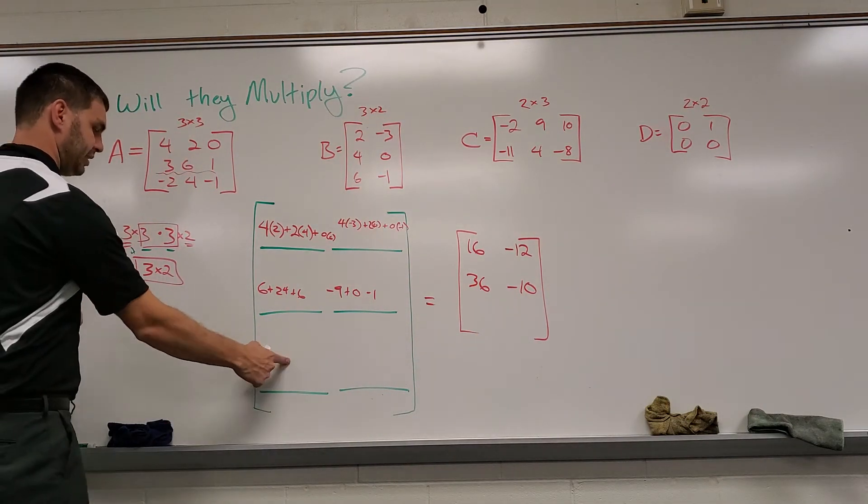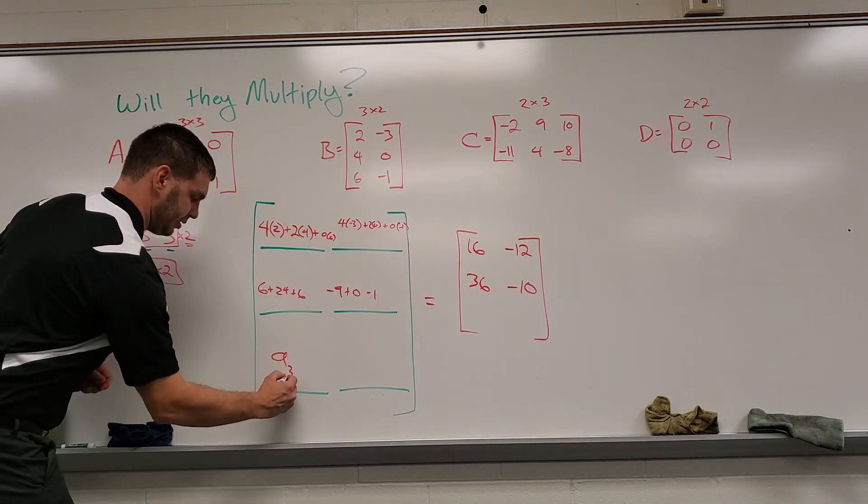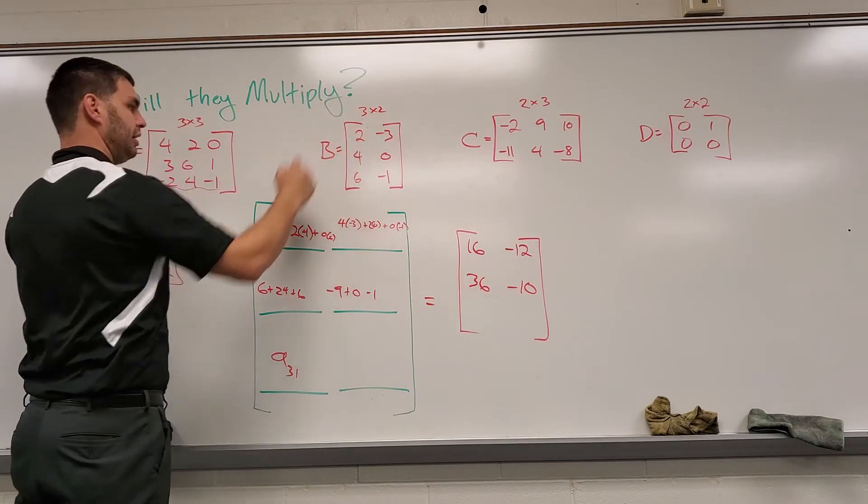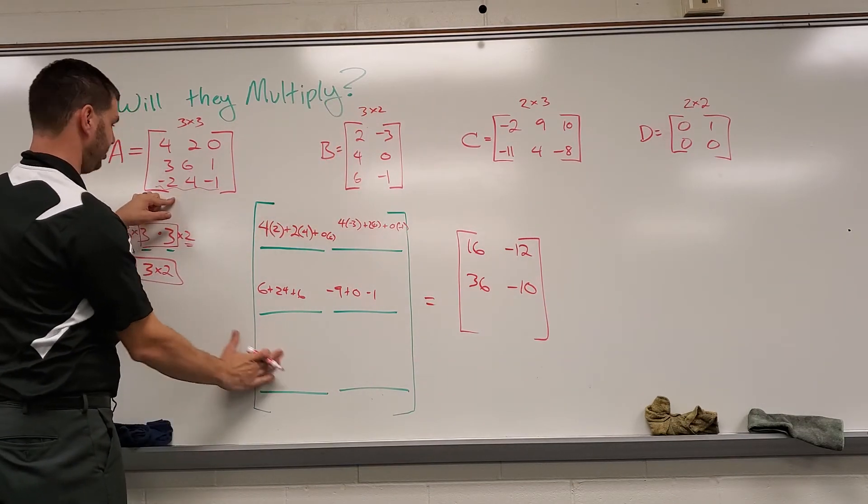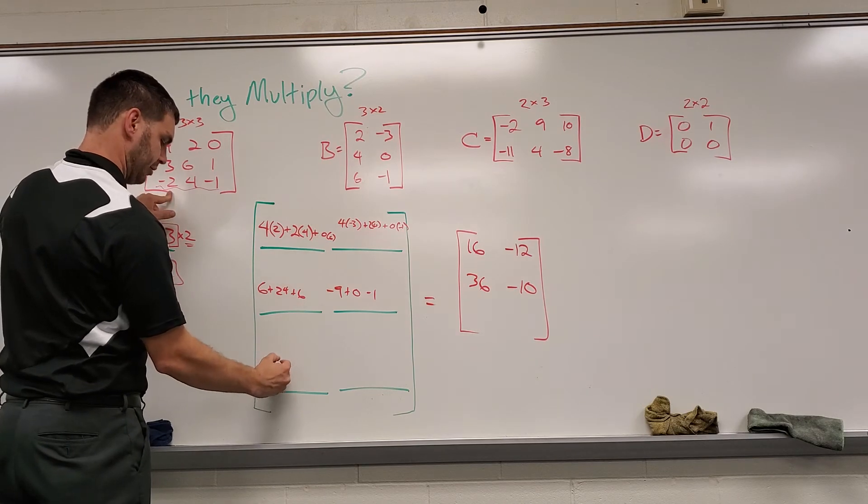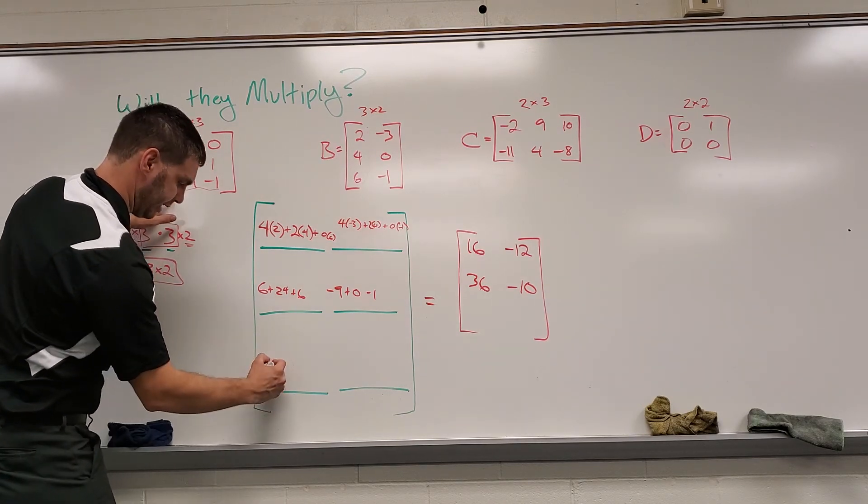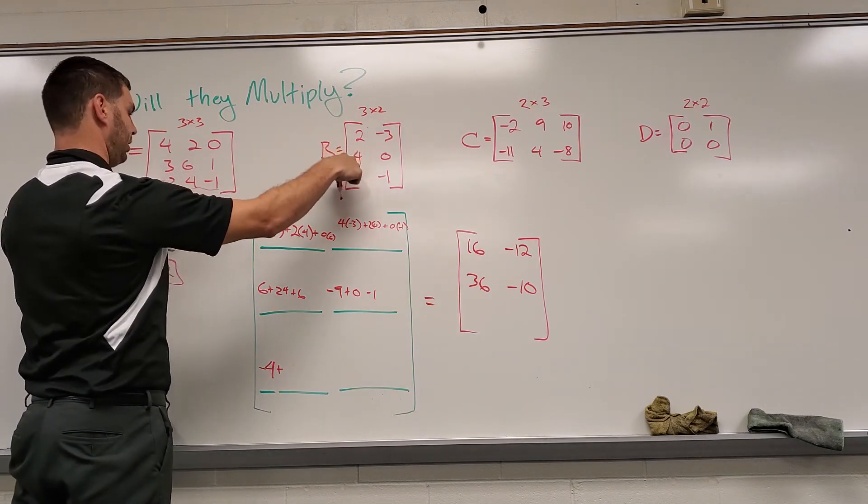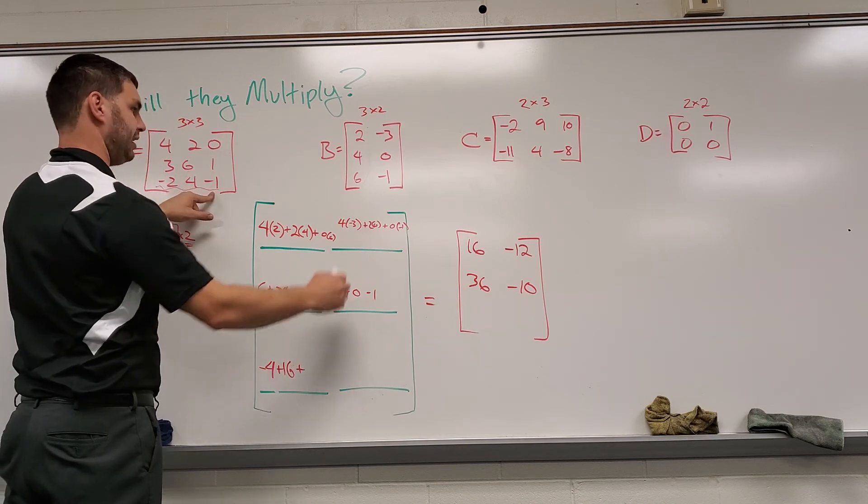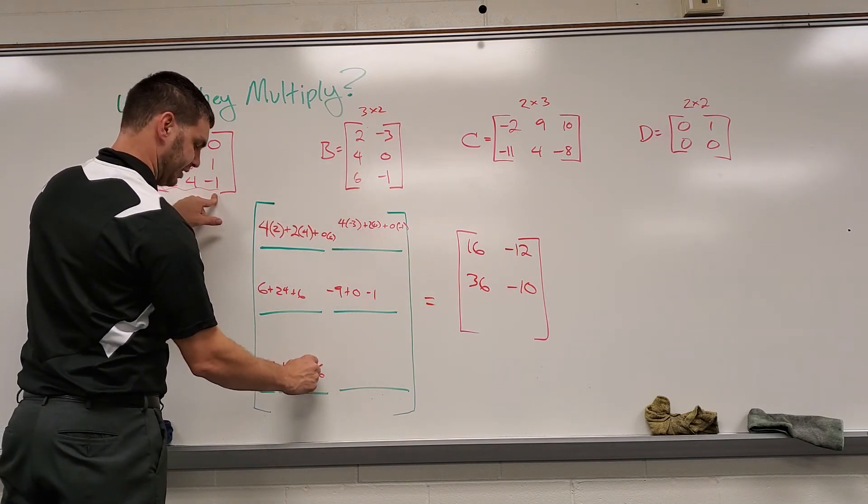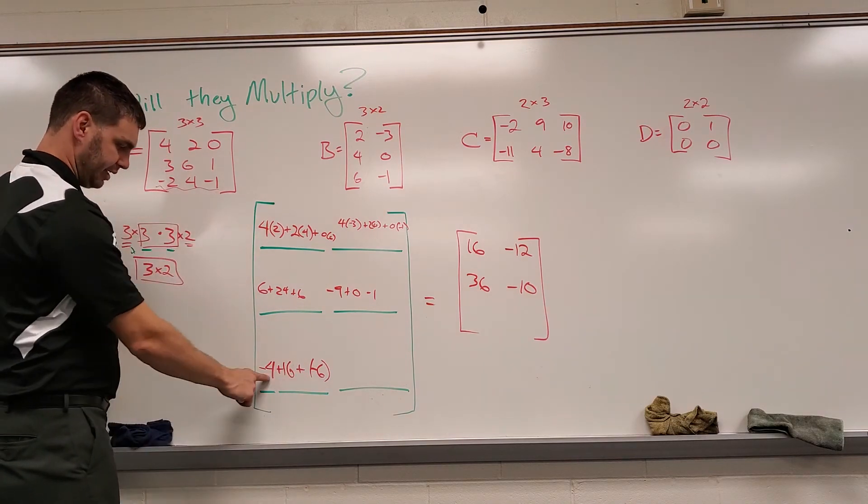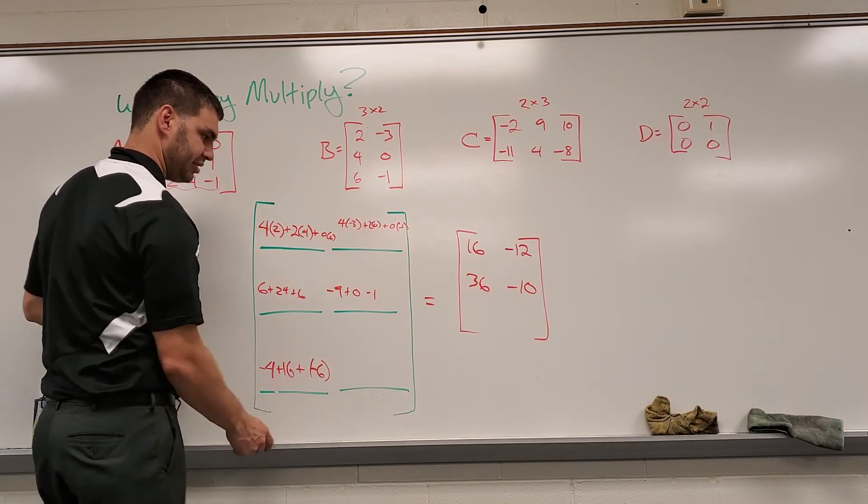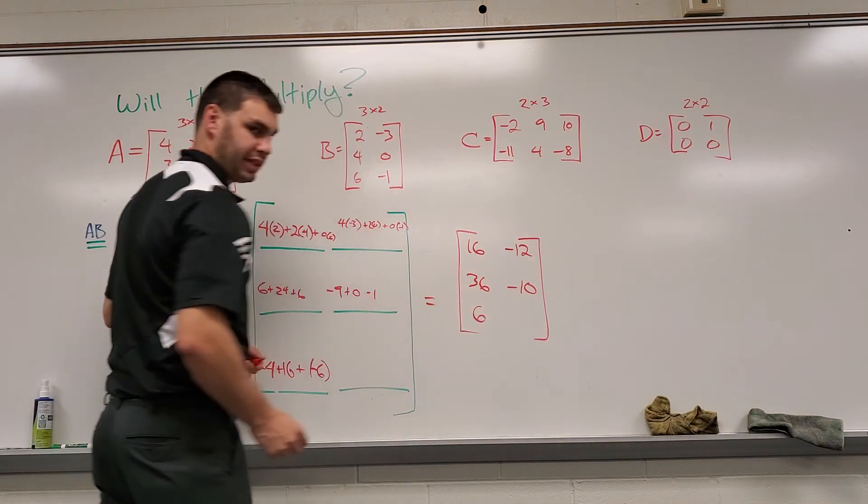And then I get to this bottom one. This is A sub three one. So the third row in my first one times my first column in the second. And if I do the math here, negative two times two is negative four. Negative four plus four times four is 16. Plus negative one times six is a negative six. Negative four plus 16 is 12. 12 plus a negative six or 12 minus six is just six for the bottom left spot.